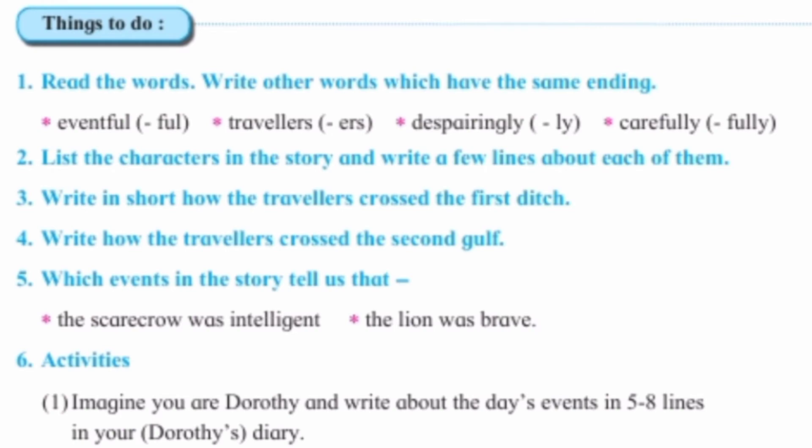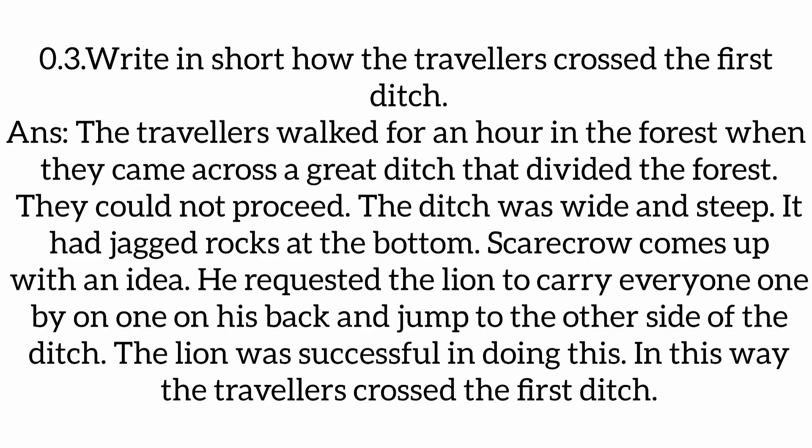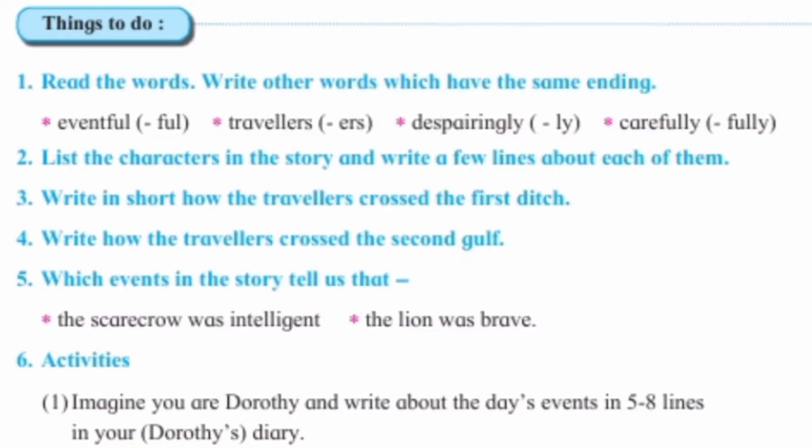Third one: write in short how the travelers cross the first ditch. Fourth one: write how the travelers cross the second ditch.